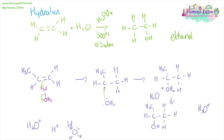We are going to get our propanol — in this case, propan-2-ol. If the hydroxide had gone on to the other carbon instead, we would have had propan-1-ol. This is important and we will come back to it in a later video.